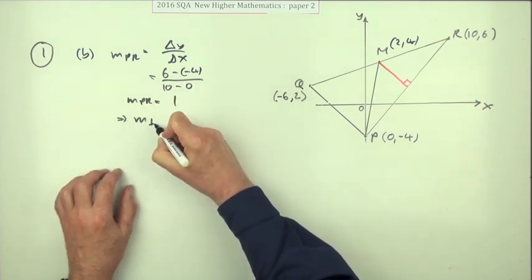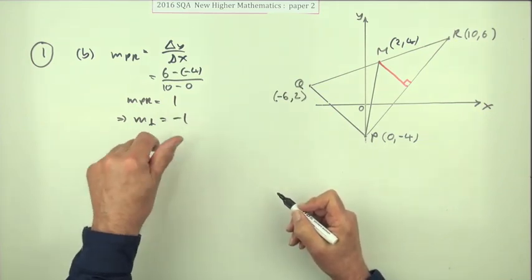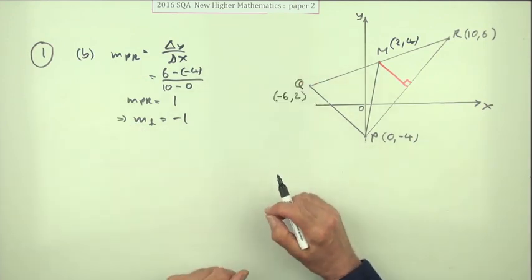Which means that the perpendicular gradient should be negative 1. And usually it's sufficient just to state that, just using the negative of the reciprocal without going through having to justify it by saying the product should come to negative 1.